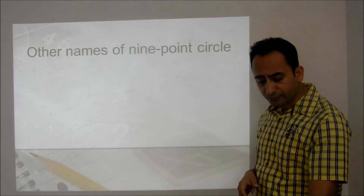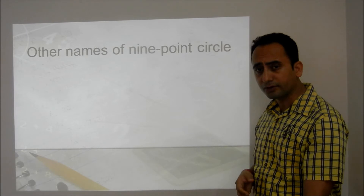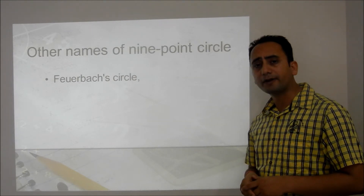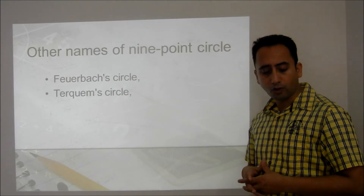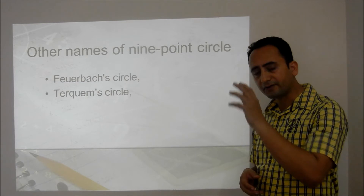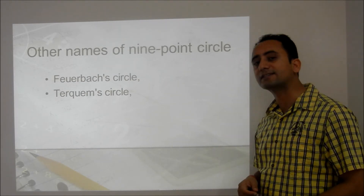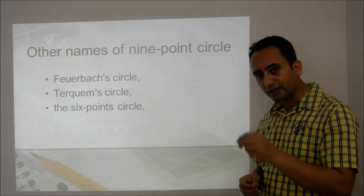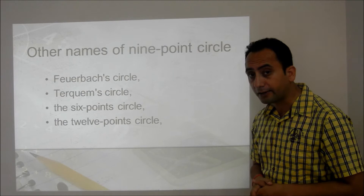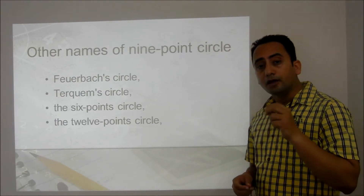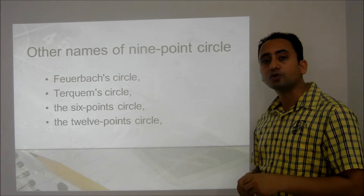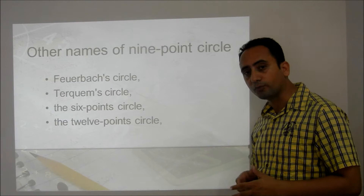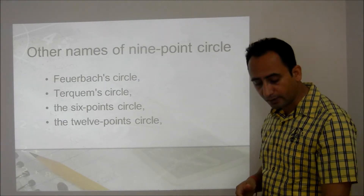What are the other names of the 9-point circle? It is also called Feuerbach's circle, because Feuerbach was one of the mathematicians who studied it — though he only found 6 points. It is also known as Jacabi's circle, because he proved it is a 9-point circle. It is also called the 6-point circle and the 12-point circle, because it is tangent to the excircles of a triangle, giving 3 additional contact points.